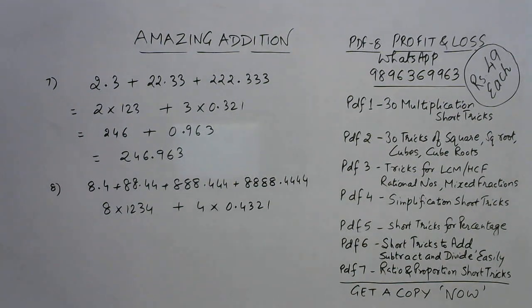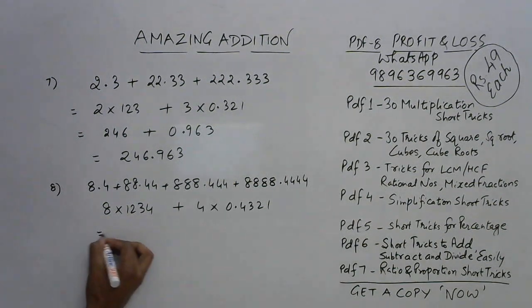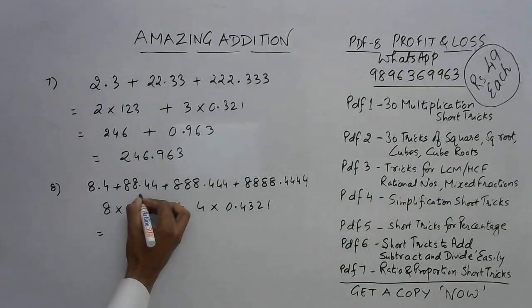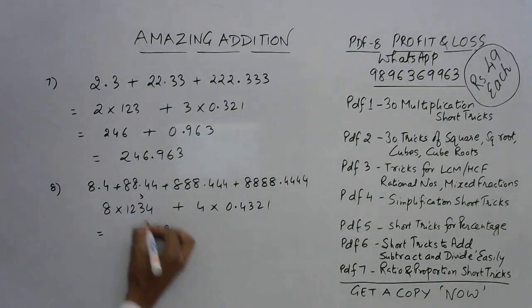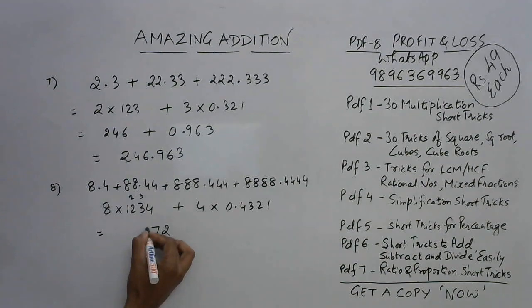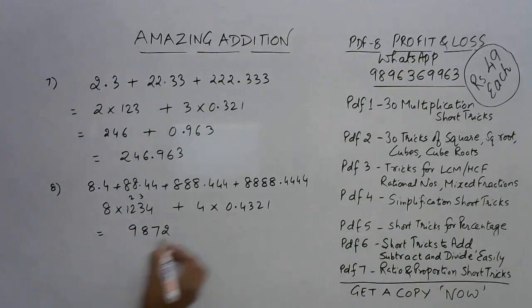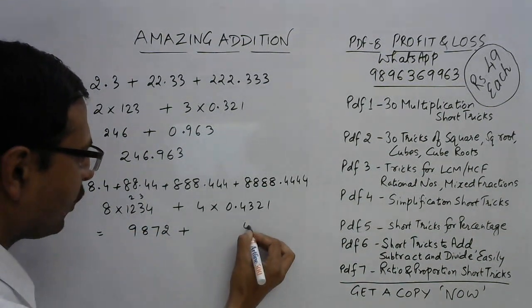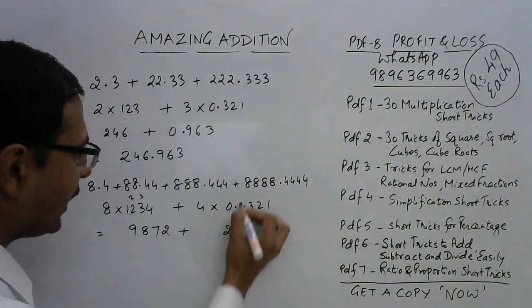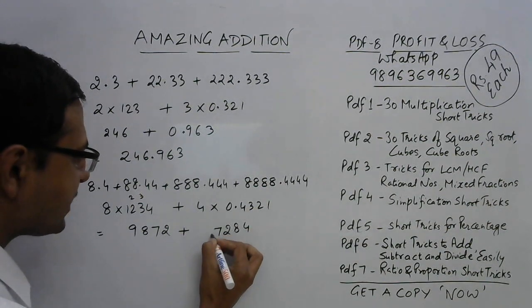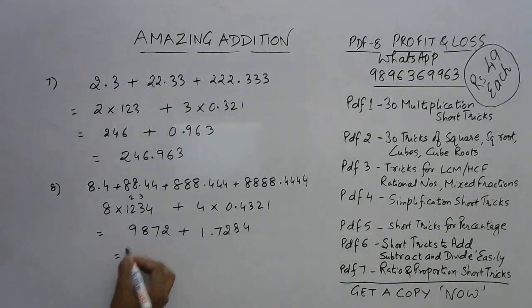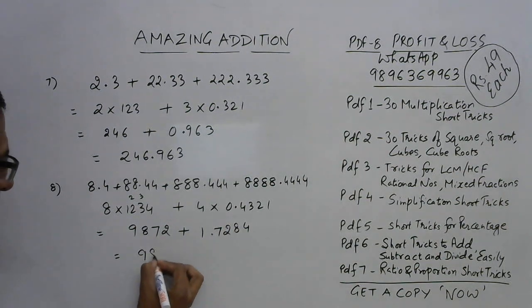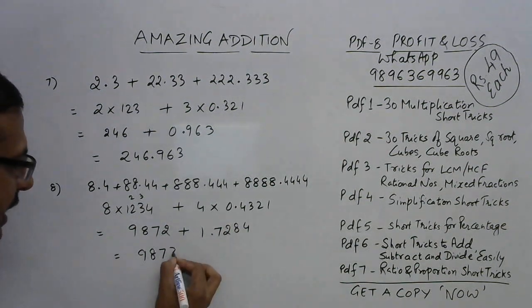Let's find the two products now. This is 8×4=32, 2, 3 carry so 24+3=27, 7, 2 carry, 16 means 18, 8, 1 carry means 9. And then here we have 4×1=4, 4×2=8, 4×3=12, 2, 1 carry means 17, so 7 and 1. And adding them is just simple now: 9872 becomes 9873 and after decimal we have 7284.